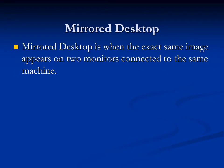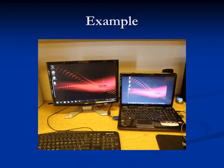There are two different ways to have more than one monitor on your computer. The first one we're going to talk about is what's called a mirrored desktop. A mirrored desktop is when the exact same image appears on two monitors connected to the same machine. In this example here, you can see that both monitors are displaying the exact same image, with the icons down the left-hand side and the taskbar along the bottom.